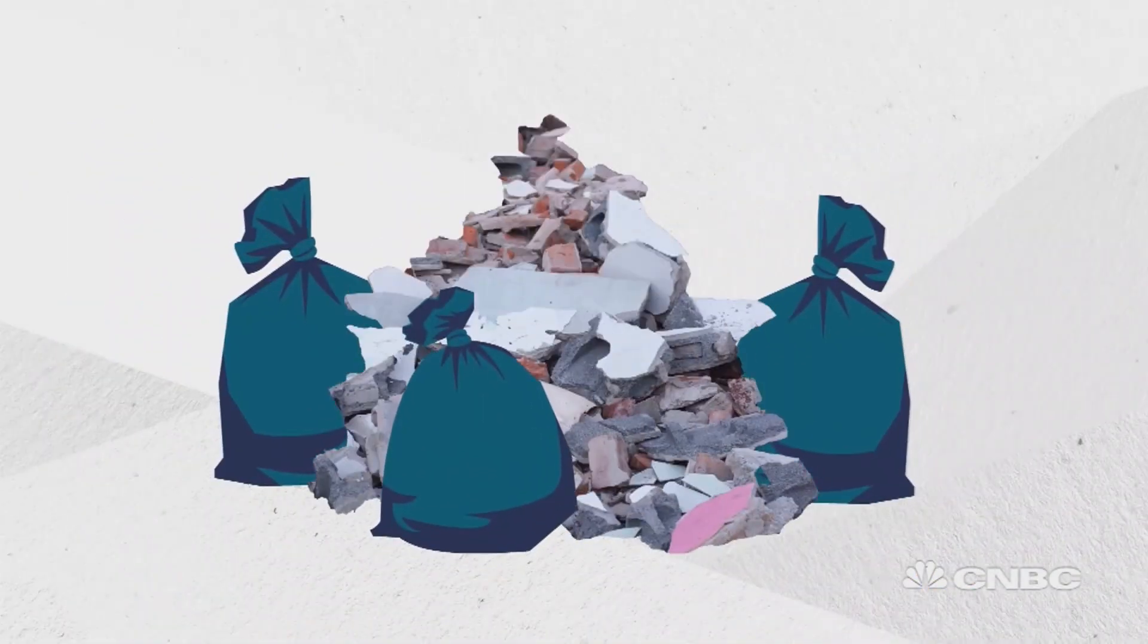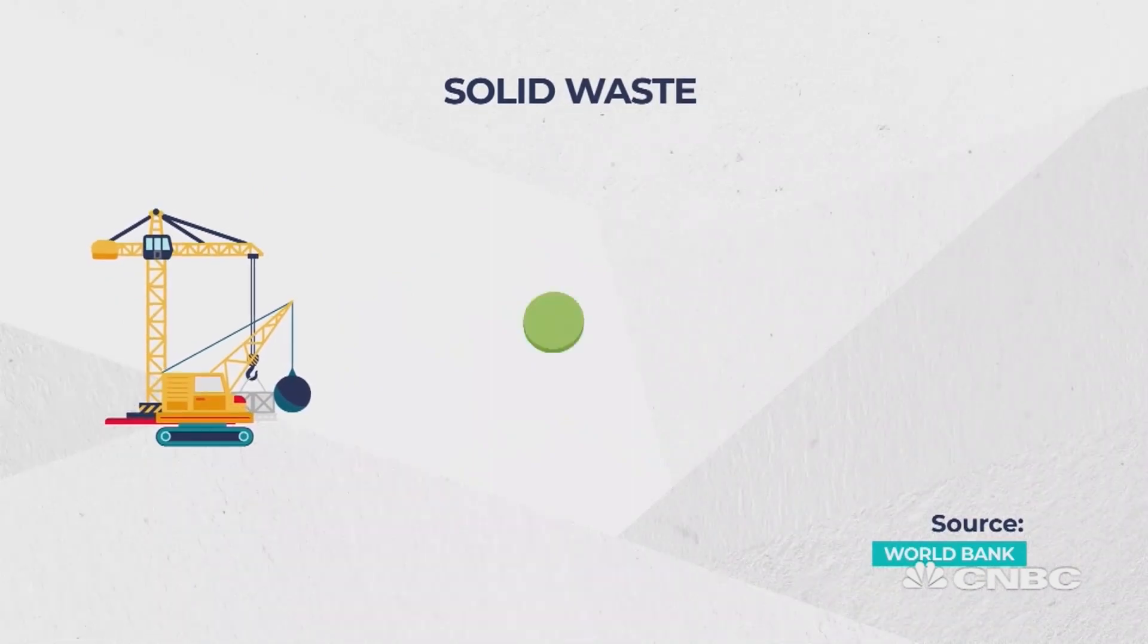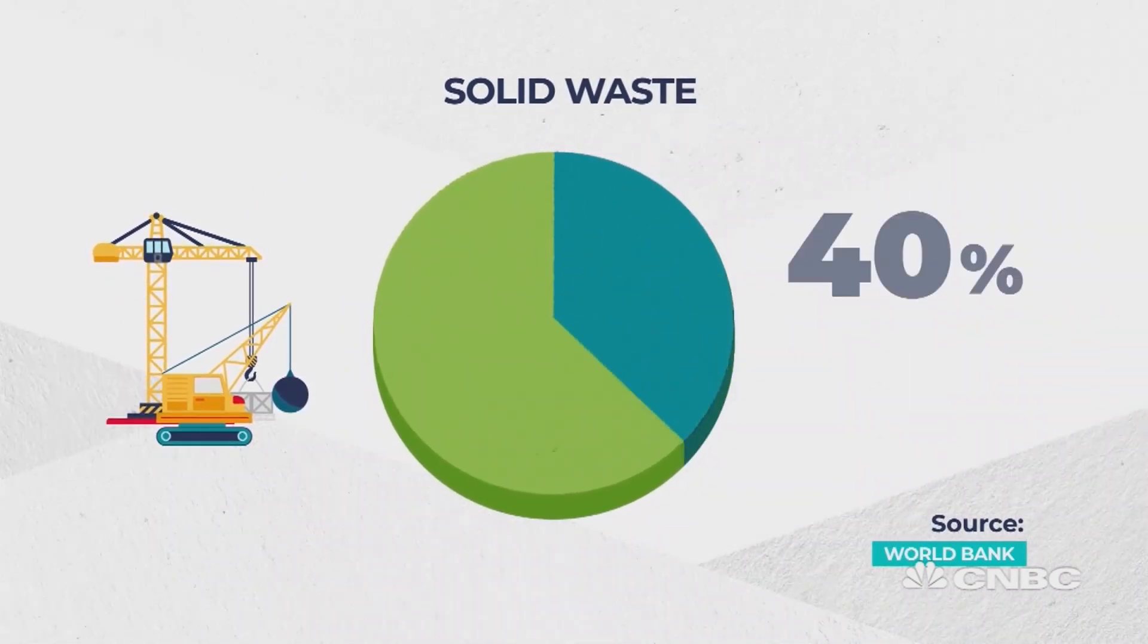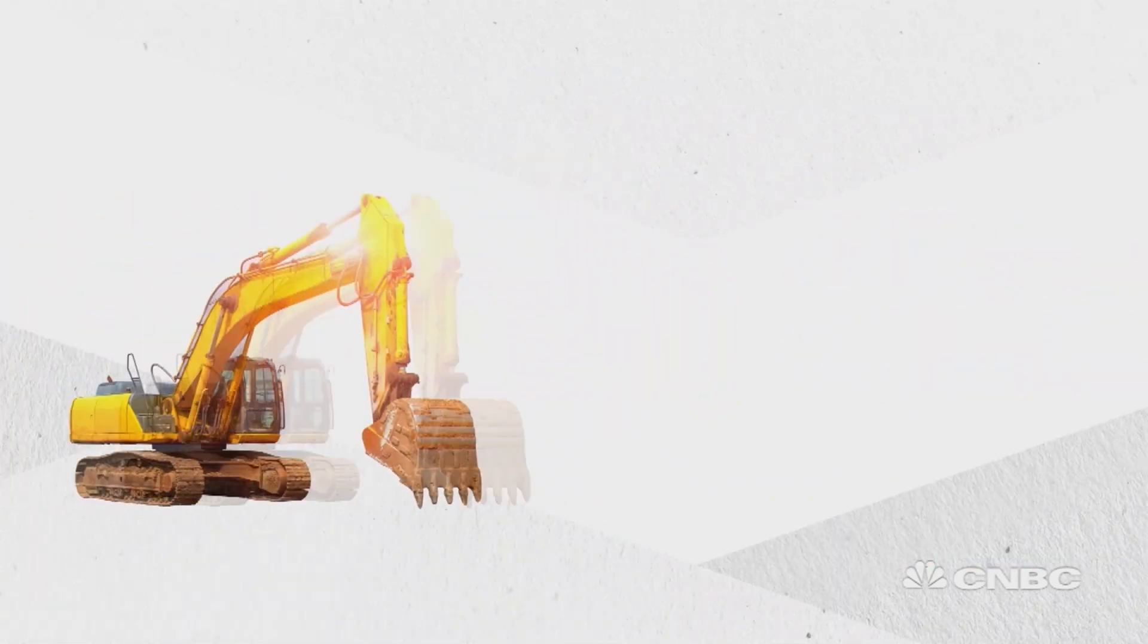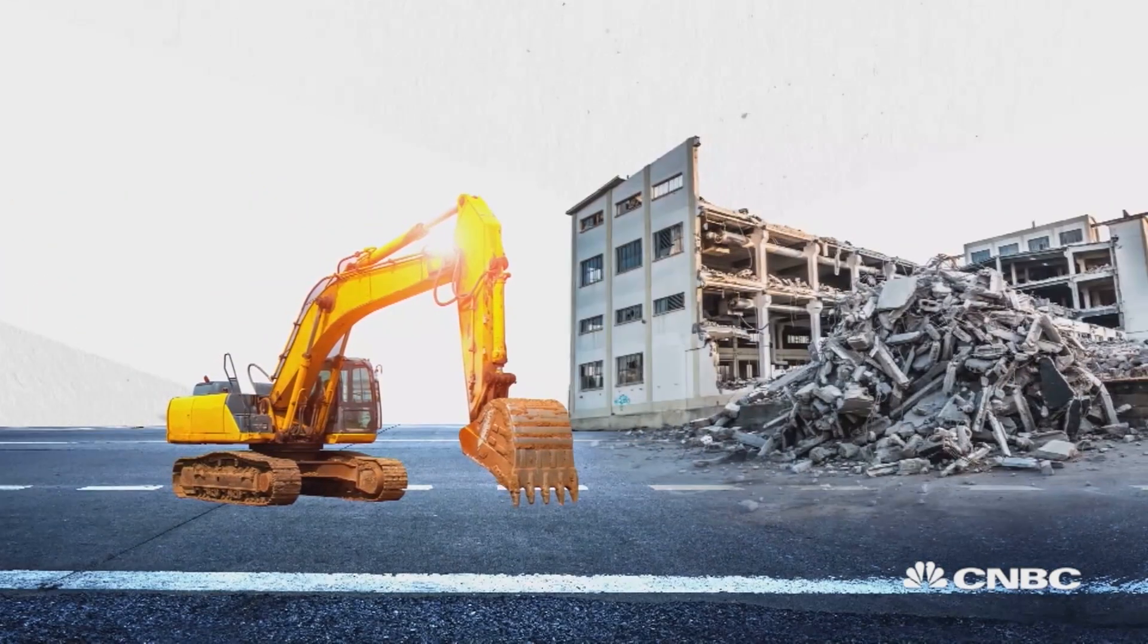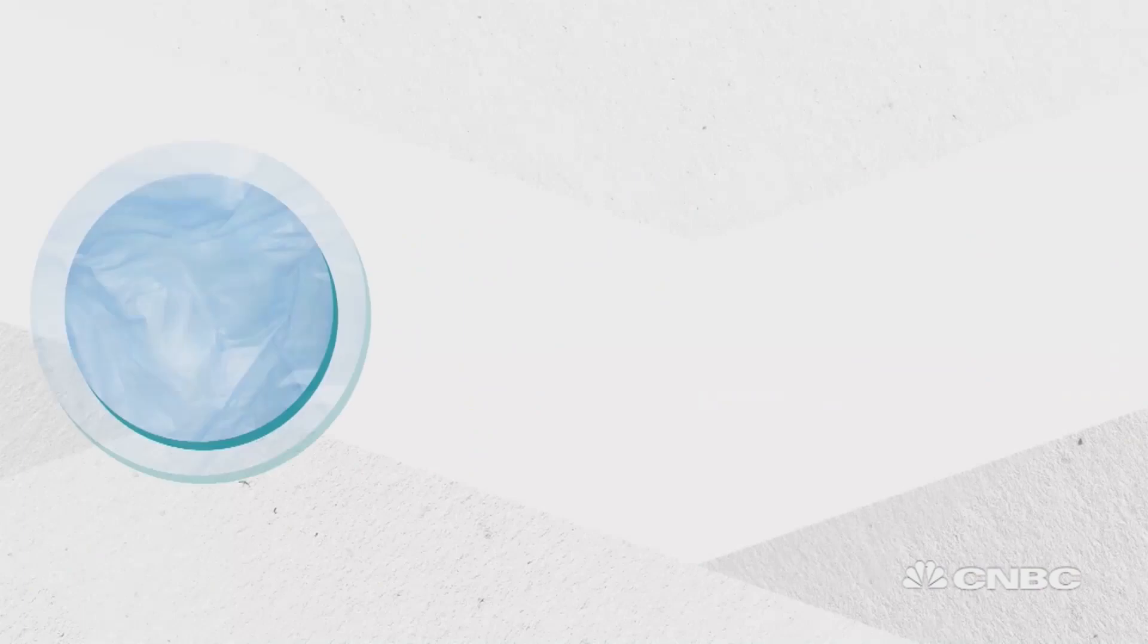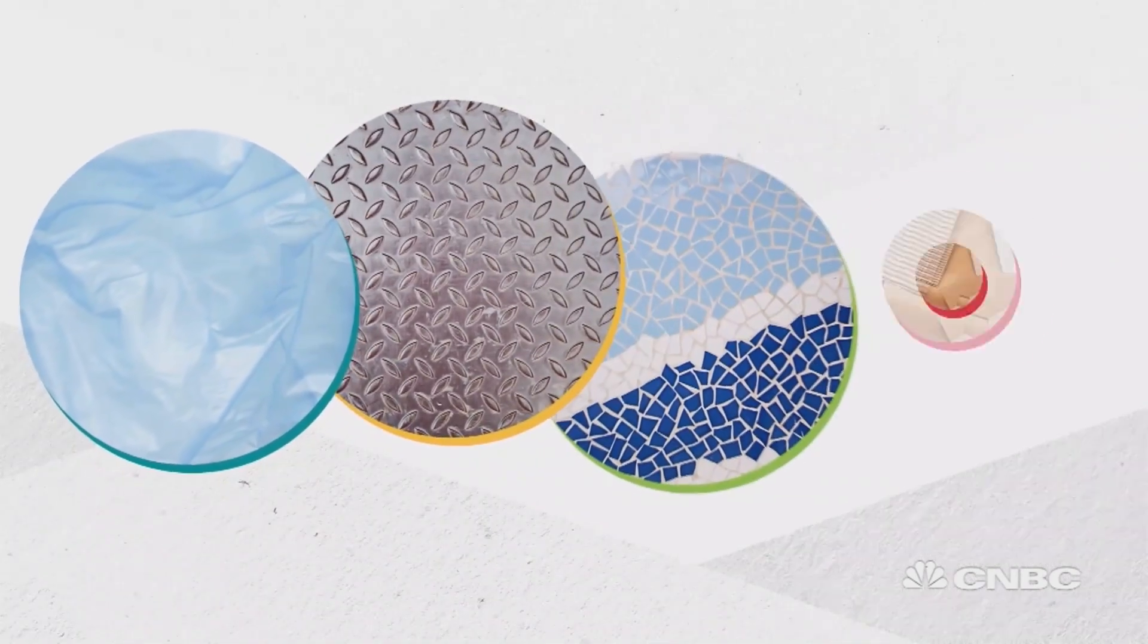Waste is another big problem. Construction and demolition waste can represent up to 40% of solid waste produced in some cities. It's made of materials from excavation, roadwork and demolition, but also complex waste like plastics, metal, ceramic and cardboard.